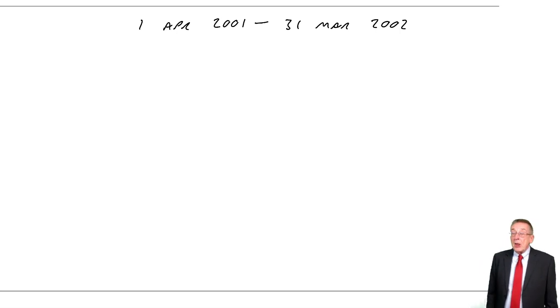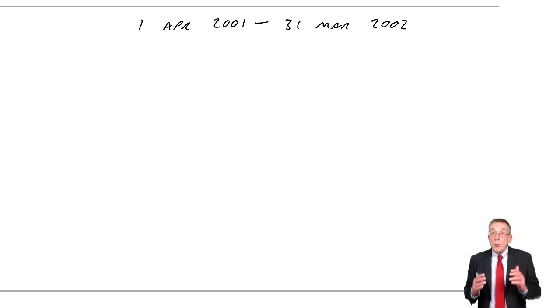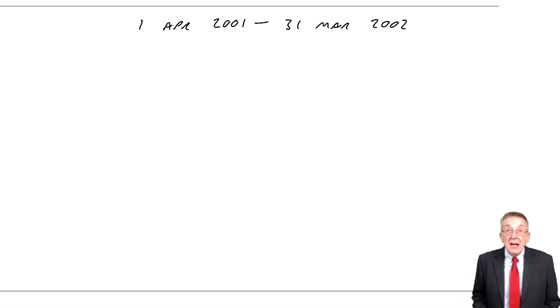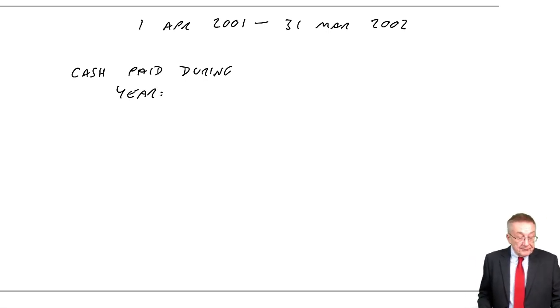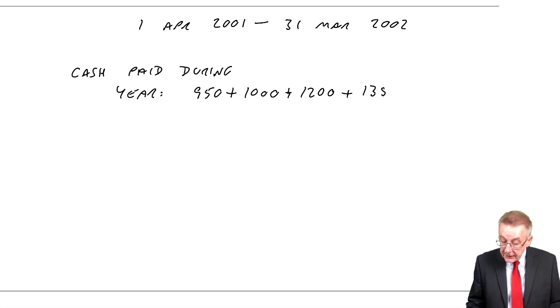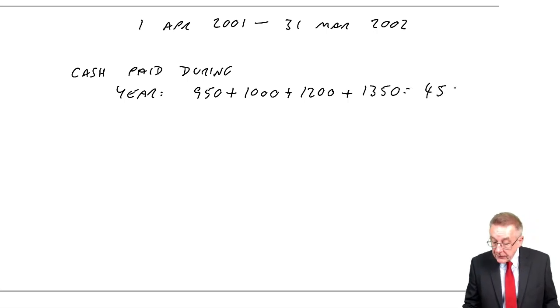Let's work out what will appear in the statement of profit or loss and the statement of financial position. Although you can get the same figure several ways, I don't care, the most efficient is this. First of all, what was the total cash paid during the year? Our year started April, so on the 12th of April, he paid £950. July, another £1,000. October, another £1,200. January, another £1,350. So the total cash paid was £4,500.